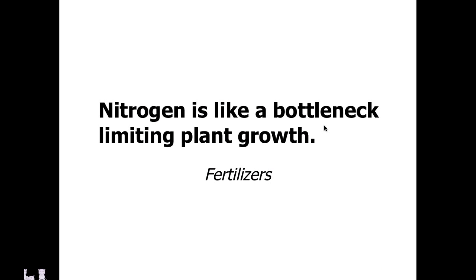Nitrogen is frequently one of the bottlenecks — it's what will limit plant growth if there is insufficient nitrogen. This is in part why we have to use fertilizers or supplement with nitrogen. Some plants, things like corn and cotton, are not particularly good at fixing nitrogen. Farmers planting very large quantities of these crops will need to practice what's called crop rotation — alternating every few years between high-nitrogen-usage crops and highly nitrogen-efficient plant fixers.